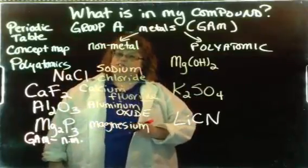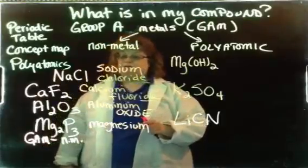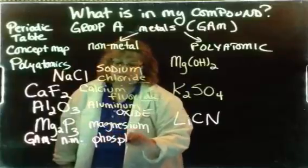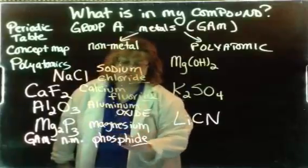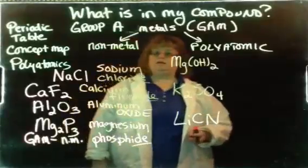And then phosphorus, remember, we have to change its ending to an I, and that's kind of a little tricky on that one. But it sounds like this, phosphide. So we have magnesium phosphide. All of those are group A metals attached to nonmetals.